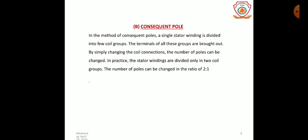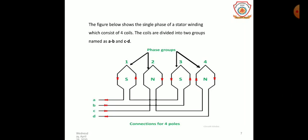In the consequent poles method, connections of stator windings are changed with the help of simple switching, due to which the number of stator poles gets changed in the ratio of 2:1, and hence either of two synchronous speeds can be selected. The figure below shows the single phase of a stator winding consisting of four coils divided into two groups, named as first group A-B and second group C-D.